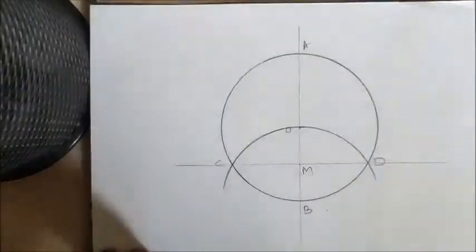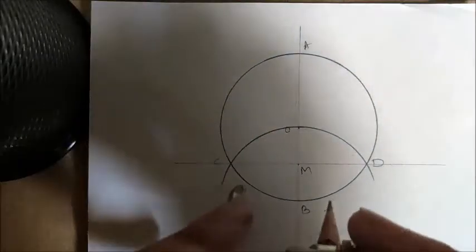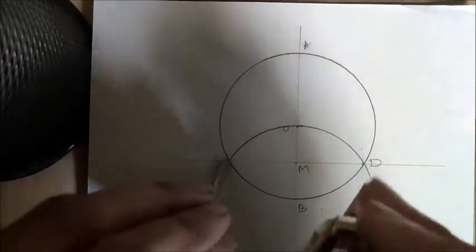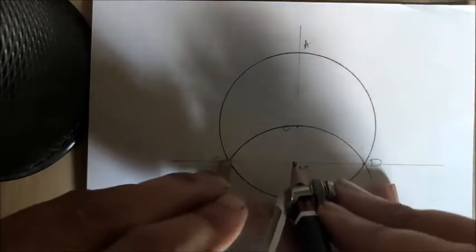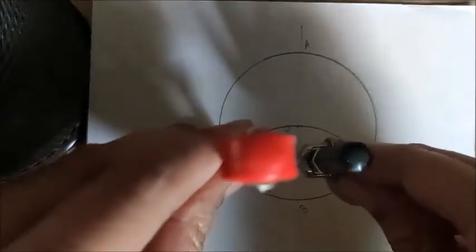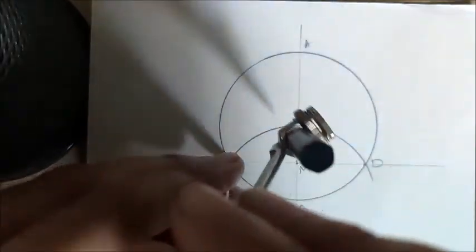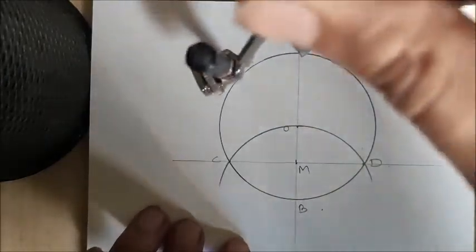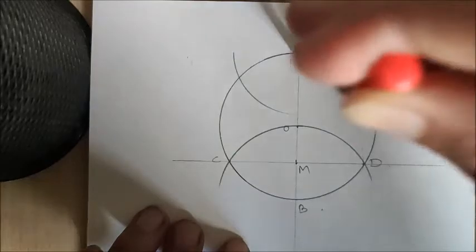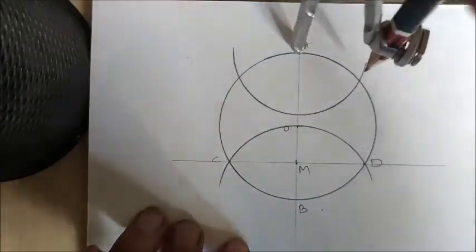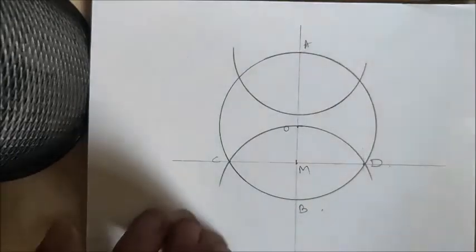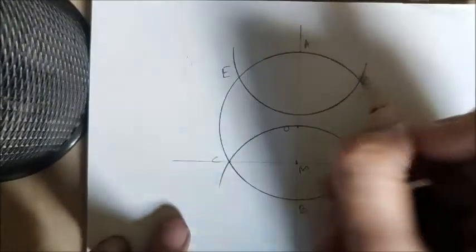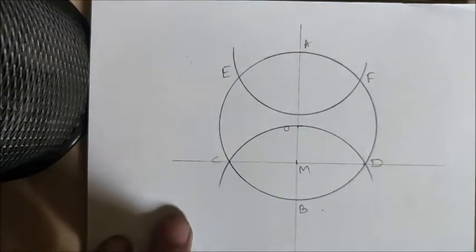The next step towards dividing the circle into seven equal parts is to measure the distance of CM. With this distance CM, keep the pointer on A and draw a semicircle. We need two arcs, so draw a semicircle from A.